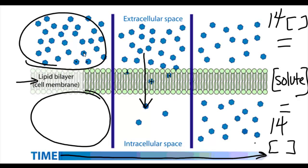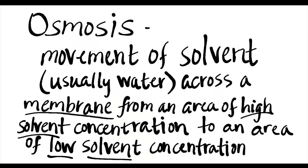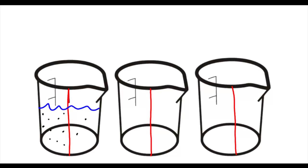In contrast, osmosis is the movement of solvent, usually water, across a membrane from an area of high solvent concentration to an area of low solvent concentration. Let's take a look at an example of osmosis.